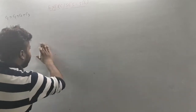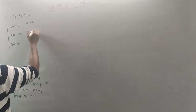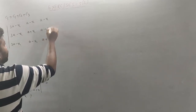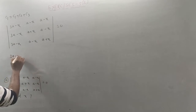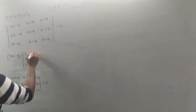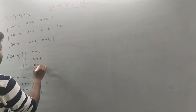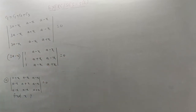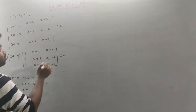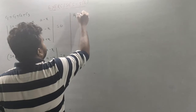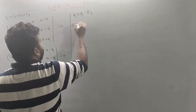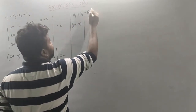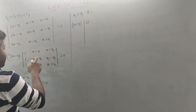So 3a minus x — taking that as common. We can write a minus x, a plus x, a minus x. Apply the row operation R1 tends to R1 minus R2. The common form: 3a minus x, with 1 minus 1 giving 0 and a minus x minus a minus x giving 0.